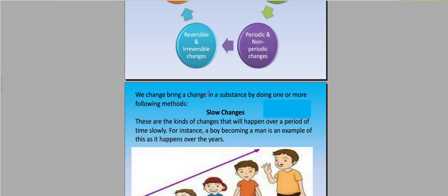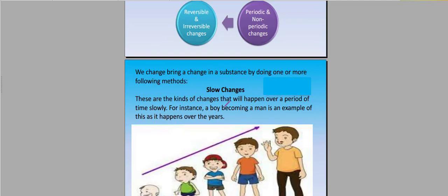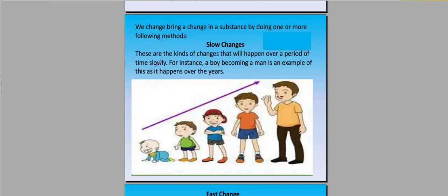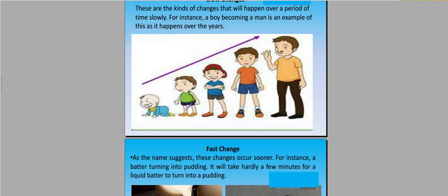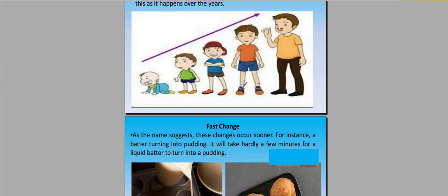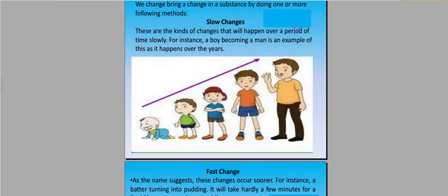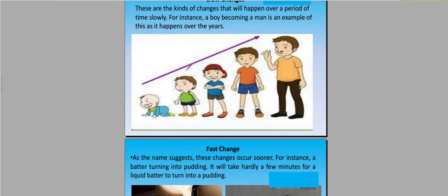We bring a change in a substance by doing one or more following methods. What are slow changes? These are kinds of changes that will happen over a period of time slowly. For instance, a boy become man is an example - this happens over the years. You were a newborn baby, then you grew older, then you became a youngster, then you came into the adult. You have seen these changes in your body. It will happen over a period of time slowly, slowly.